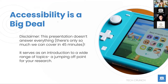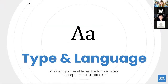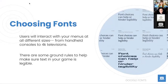As a disclaimer, this presentation doesn't answer everything — accessibility is a huge topic. It serves more as an introduction to a wide range of topics, a jumping-off point for your further research. We'll start with type and language. It's really important to choose fonts that are accessible in a wide range of sizes and in many different languages. More and more users are able to experience games in many different ways, from handheld consoles like Switch to giant 4K TVs.